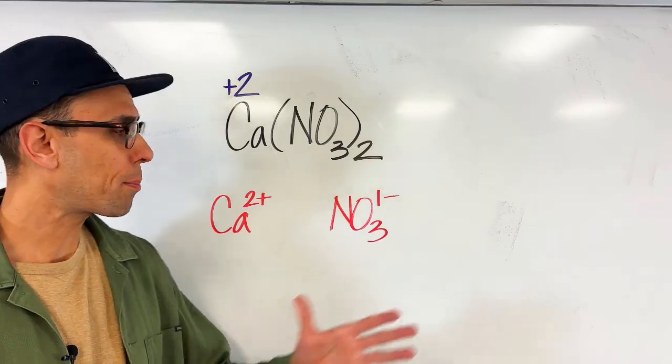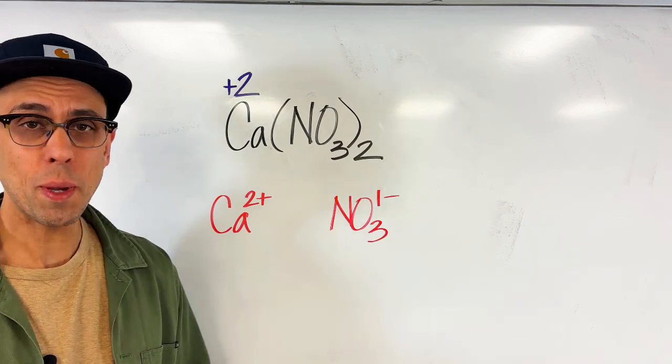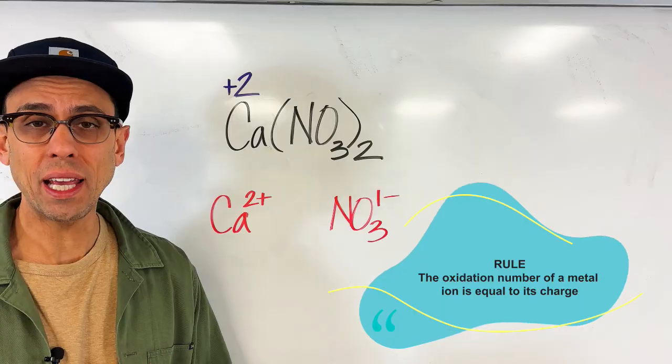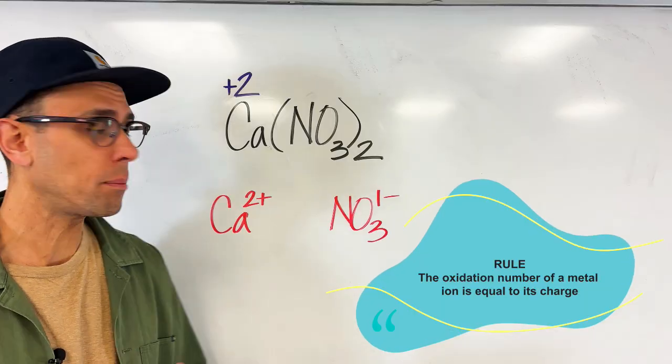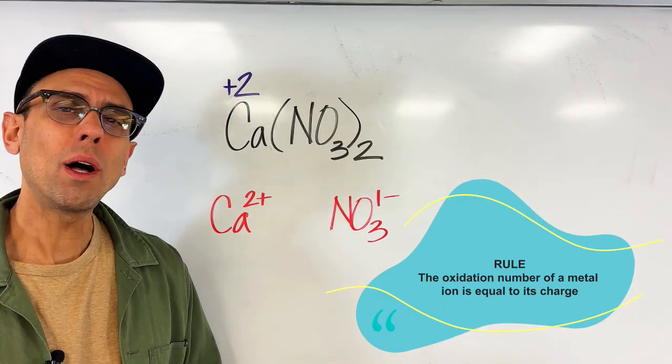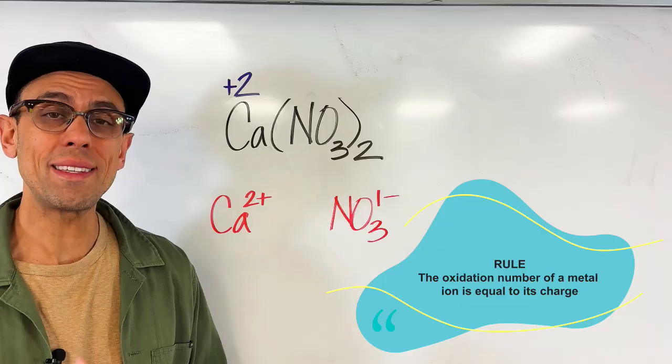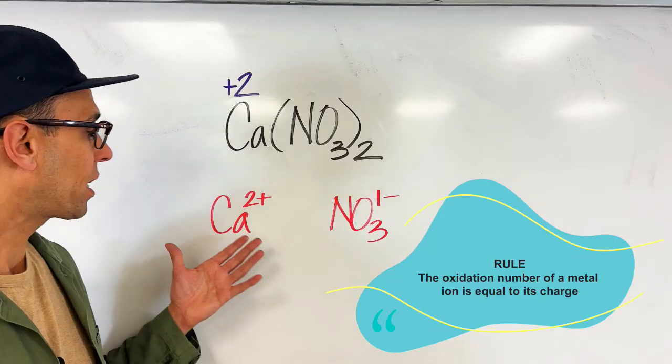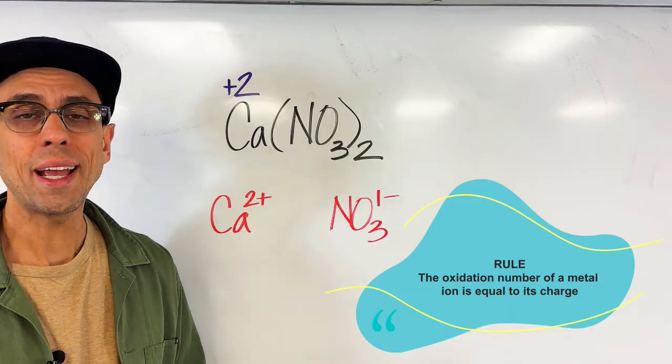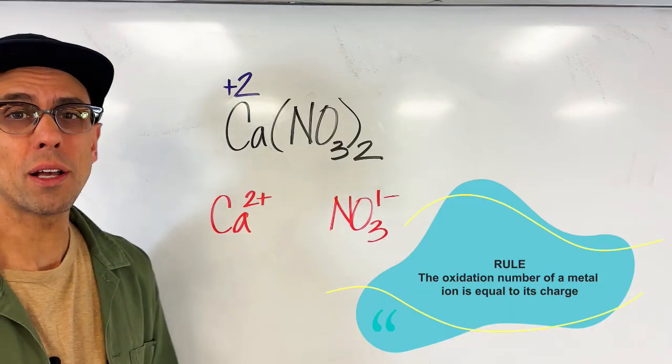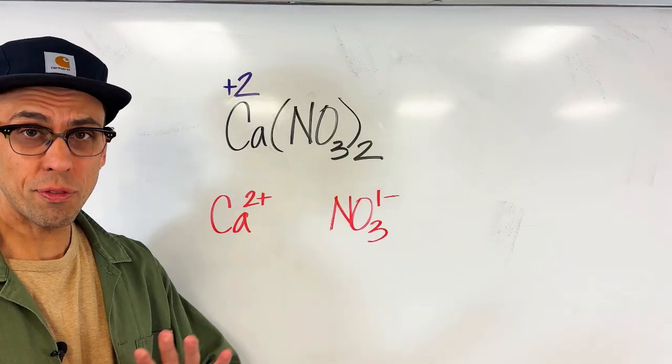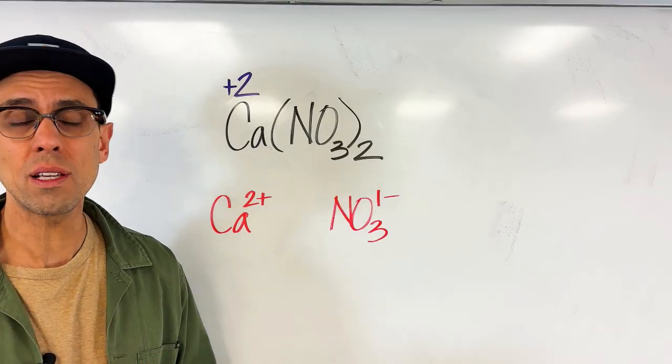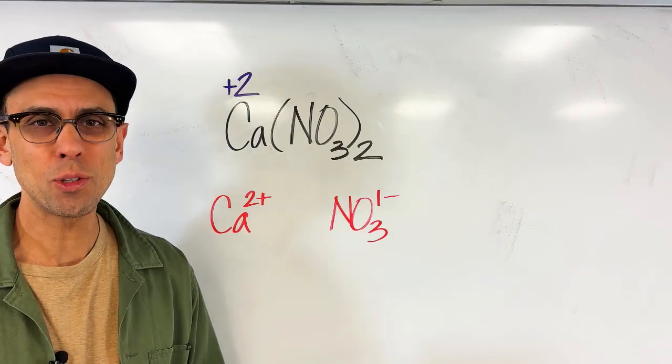But anyway, once we separate this ionic compound into the respective ions there is a rule that says any regular ion, meaning an ion just composed of one atom like calcium, well its oxidation number will be the same as its charge as an ion. So in other words because calcium has a charge of two plus its oxidation number is plus two. So we've already figured out the oxidation number of one of our elements in this ionic compound simply by separating the ions apart.